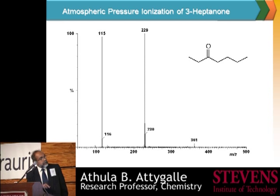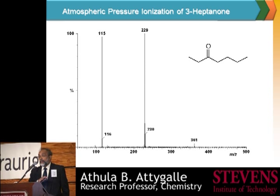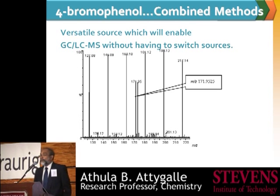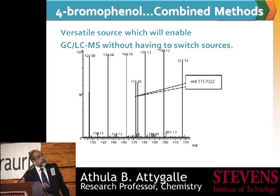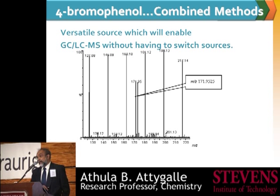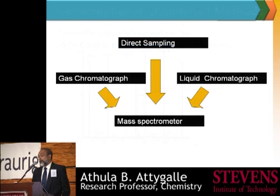We can determine the mass of a molecule to the fourth decimal, so we have very accurate mass. That helps to identify compounds. And the most important thing is that with this modified device we have made at Stevens, we can combine both liquid chromatographic and gas chromatographic methods together — and there is no such device or technique available in the market at the moment.